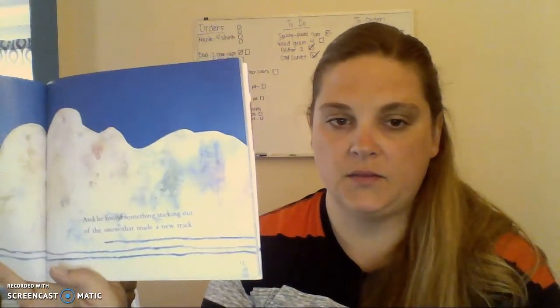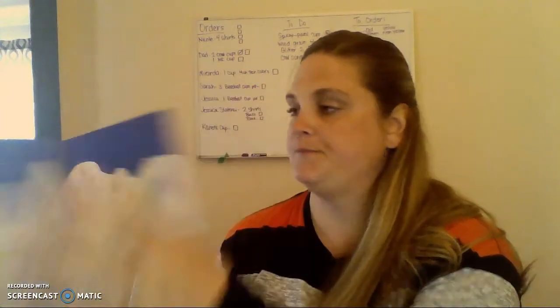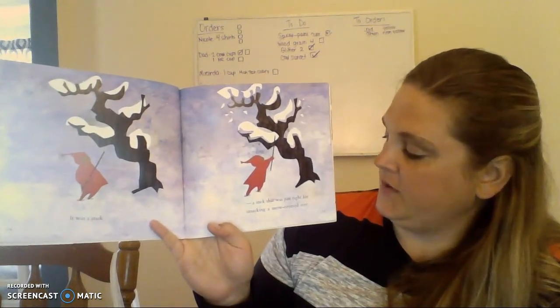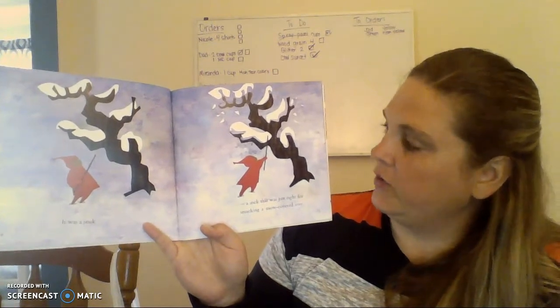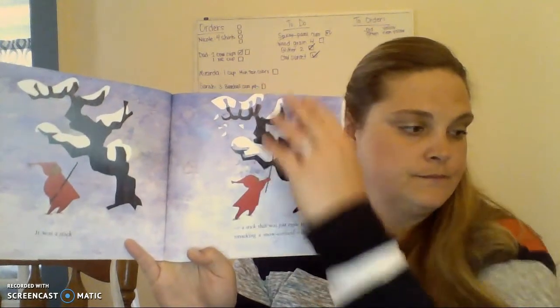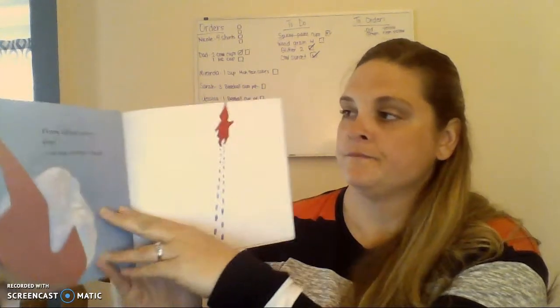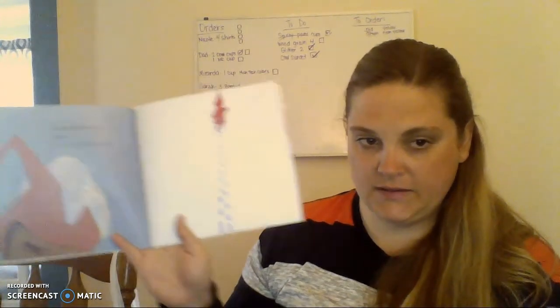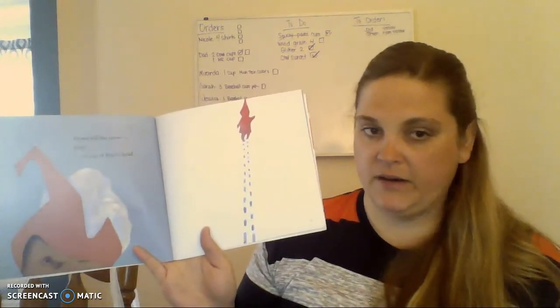Any guesses what that new track might be? It was a stick — a stick that was just right for smacking a snow-covered tree. Down fell the snow, plop, on top of Peter's head.